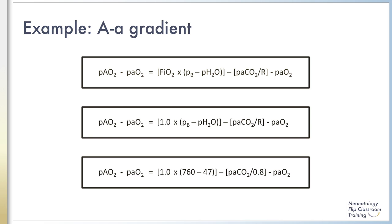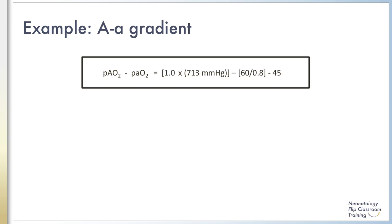Additionally, you know that at sea level the atmospheric pressure is 760 millimeters of mercury and the water vapor pressure is 47 millimeters of mercury. And unless told otherwise, R equals 0.8. Lastly, plug in your pCO2 and your PaO2 and complete your calculation. Your A-a gradient equals 593.